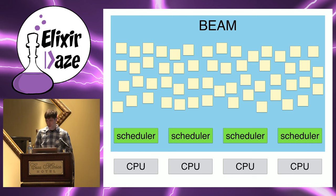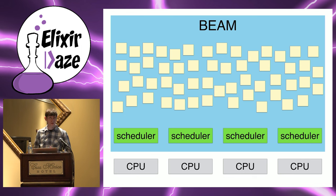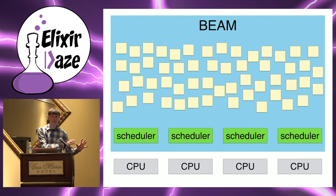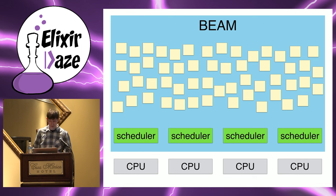When you have a system powered by BEAM — say written in Elixir with a mix project — whether you start it locally or in production as an OTP release, the story is always the same. You get your own operating system process, your own instance of BEAM, and in there you'll have a couple of threads called schedulers — by default one per CPU core, but completely configurable. Then you have a bunch of what I like to call little yellow boxes: lightweight BEAM processes. You're going to have way more of them — hundreds in smaller systems, tens of thousands or millions in larger ones.